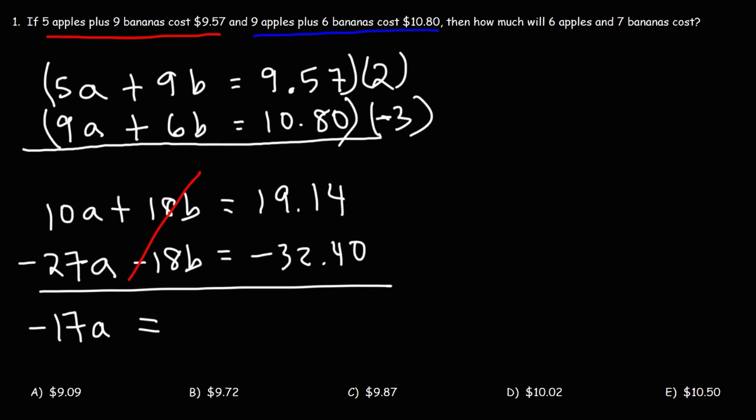Thus, this is called the elimination method because we eliminated one of the variables from the two equations. Now, add in the last two numbers, 19.14 plus negative 32.40. This is going to give us negative 13.26.